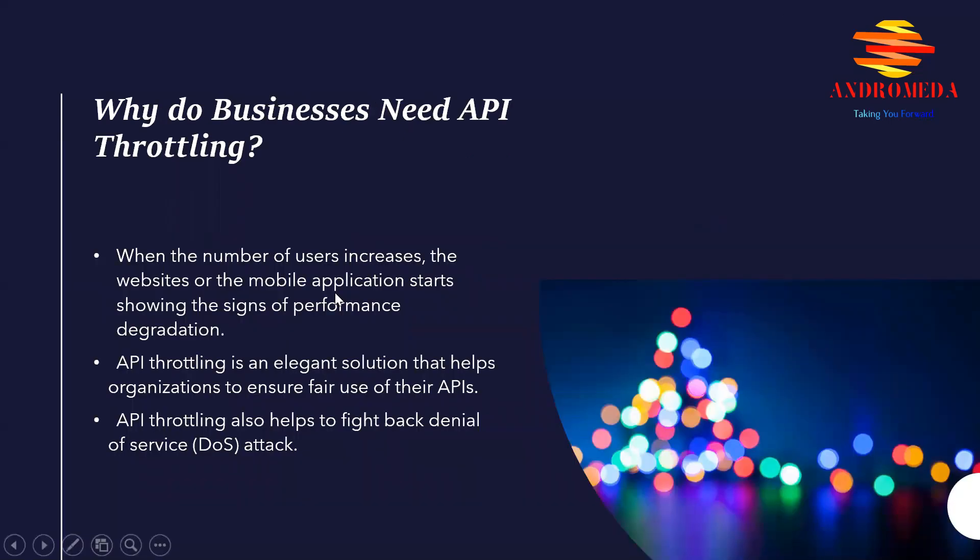So why do businesses need API throttling? APIs are one of the biggest assets of organizations. They help users of a website or mobile applications fulfill their tasks. As the number of users increases, the website or mobile application starts showing signs of performance degradation. As a result, users with better connections, applications, or faster interfaces might get a better experience than others.